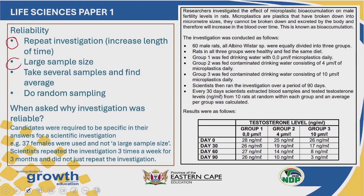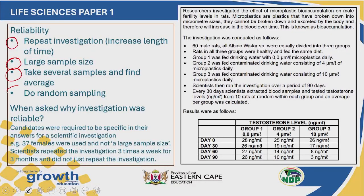The second way is to use a large sample size. If we are only using one or two subjects in our sample the results will be unreliable. A large sample size means that all our samples should have similar results, and that would make it reliable. We can also take several samples and find an average — meaning we are not relying on just one result but taking many samples over a period of time to find an average, which would be more accurate. The last way is to do random sampling, where we are not favouring any subject.